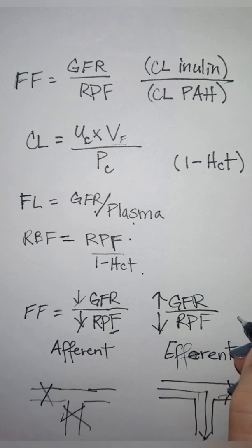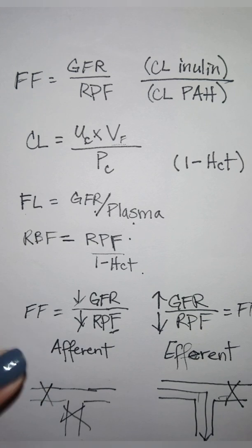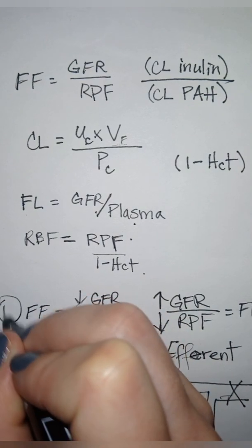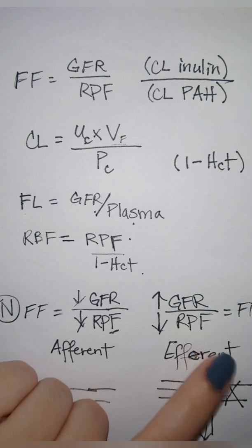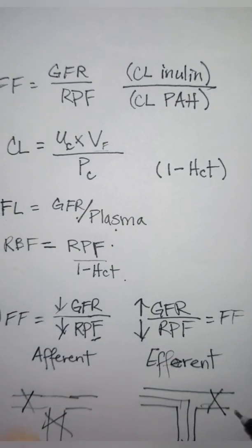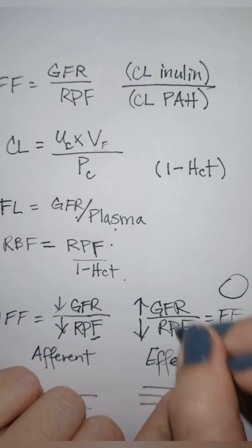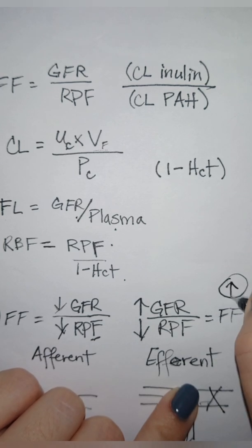So what happens is when you constrict the afferent, your filtration fraction is actually going to remain normal. Whereas when you constrict the efferent, your filtration fraction, since this increase is decreased, is going to increase.